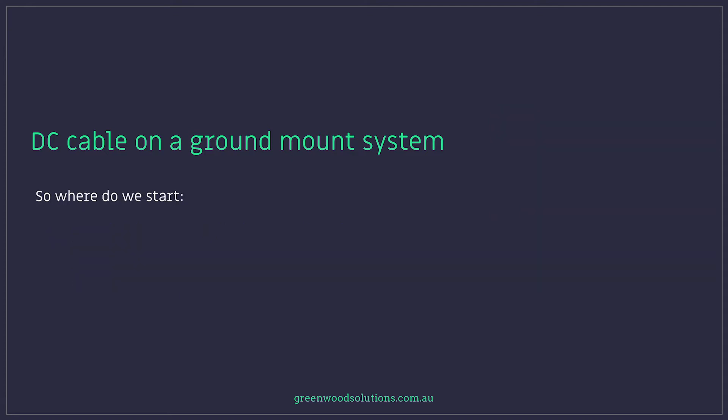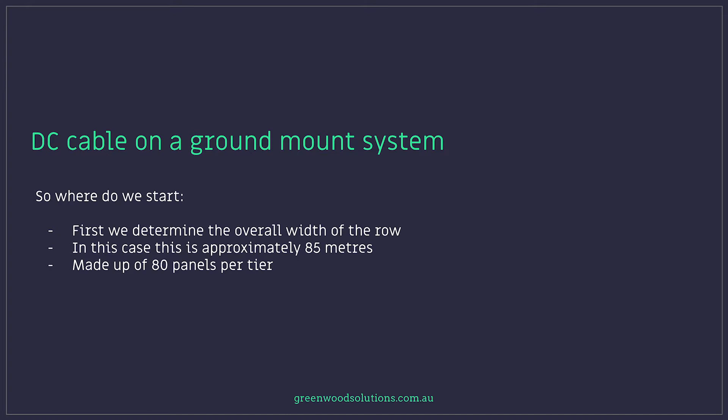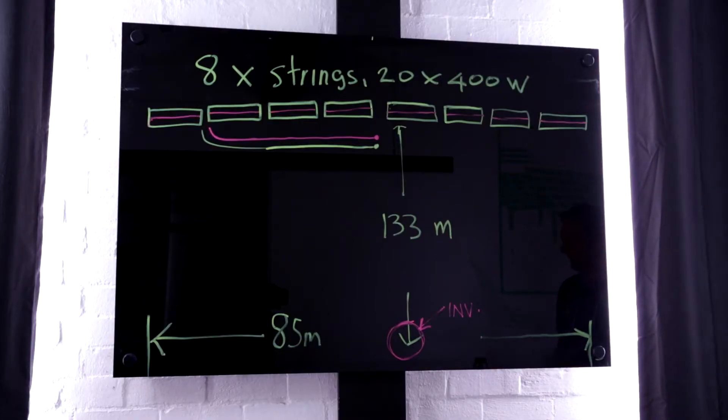So where do we start? What's the process? First we determine the overall width of the row. In this case it is approximately 85 metres. Made up of 80 panels per tier and there's two tiers.